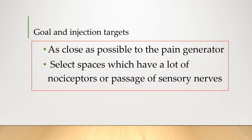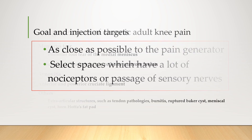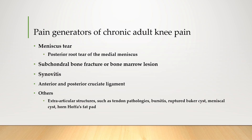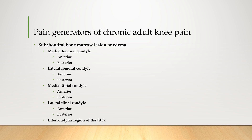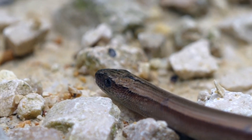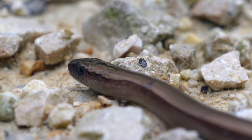The first goal is making injection targets as close as possible to the pain generator. The second is to select spaces with many nociceptors or passage of sensory nerves. The first and second goals look similar but are different. For example, we must first find the pathologic meniscus, either medial or lateral. Then localize the area of the tear and the type of tear, so the target should be close to the pathologic area. After finding the subchondral bone marrow lesion, we must find the pathologic area — either the tibia or femur — and its specific location, then make a target for the reasonable area of pathology.